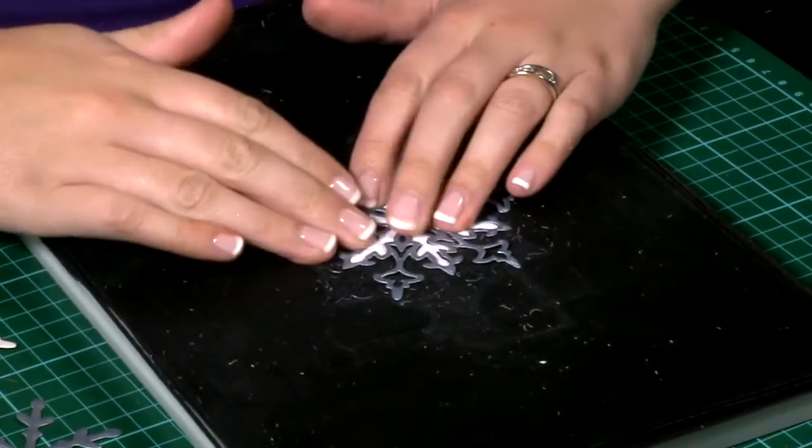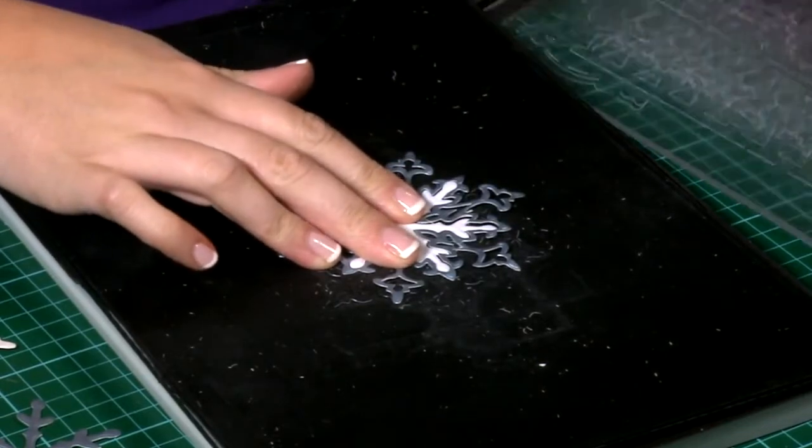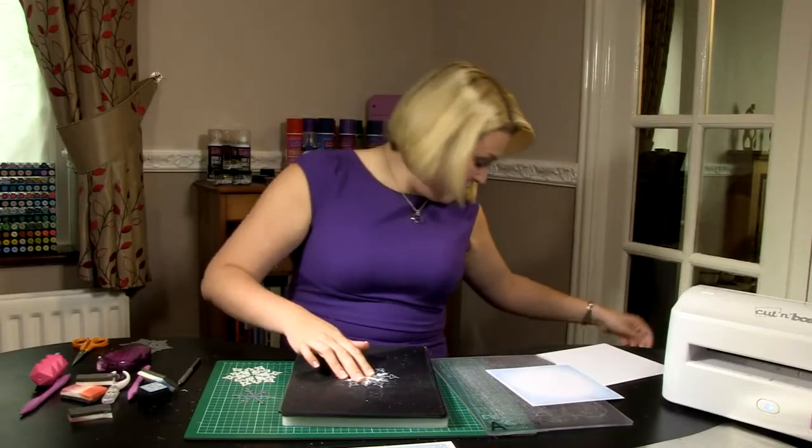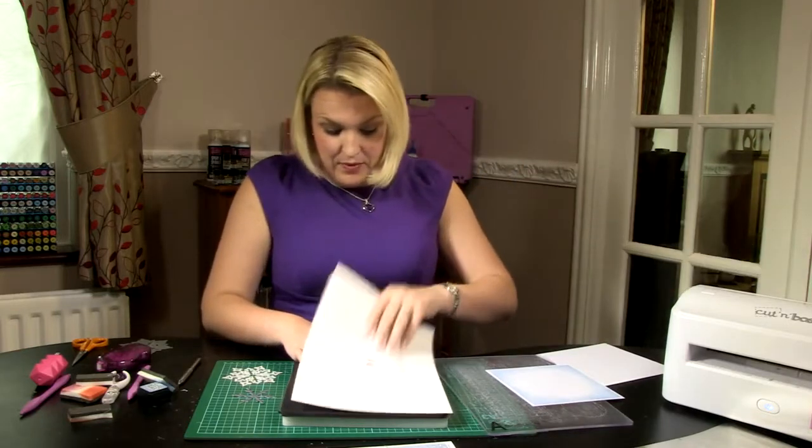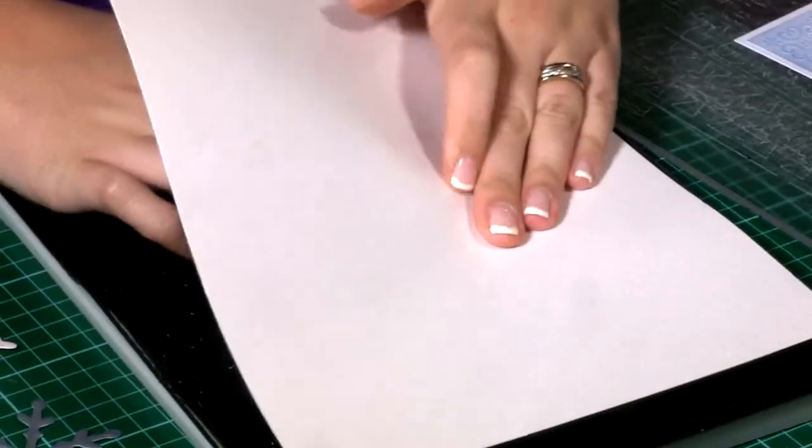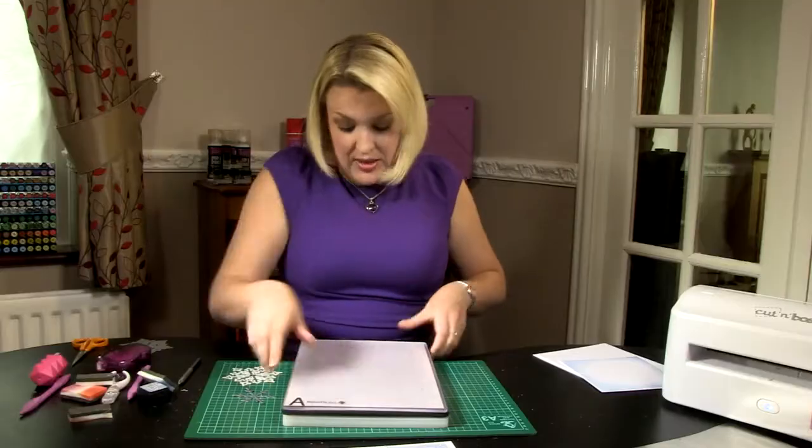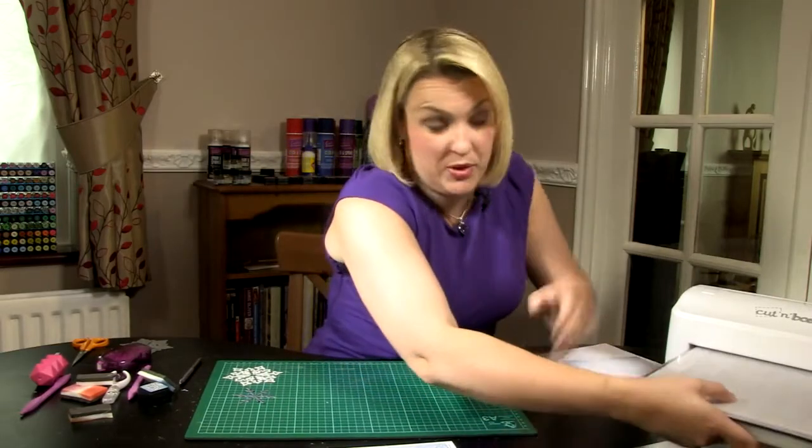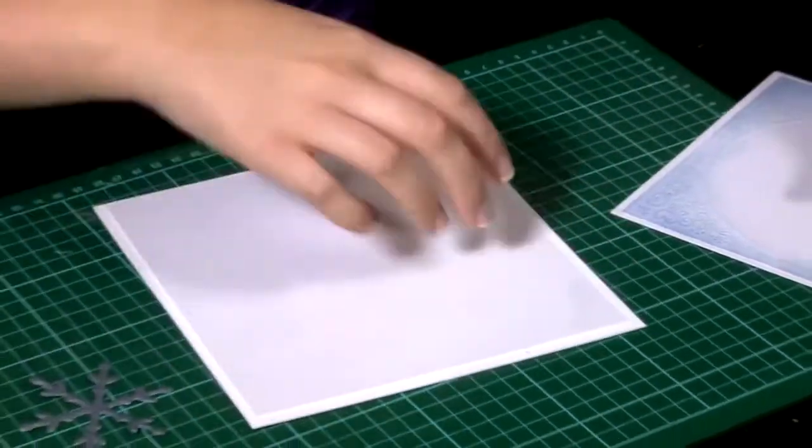And I just want to flatten it all back down together again. You find even just by pushing it together, it's going to hold it as one die. So I will just take a spare piece of card and put that on the top there, just to hold it in place. And then pop it through the machine. This is what I was saying you might want to do if you want to put it between a couple of books, just to flatten everything back up as one.